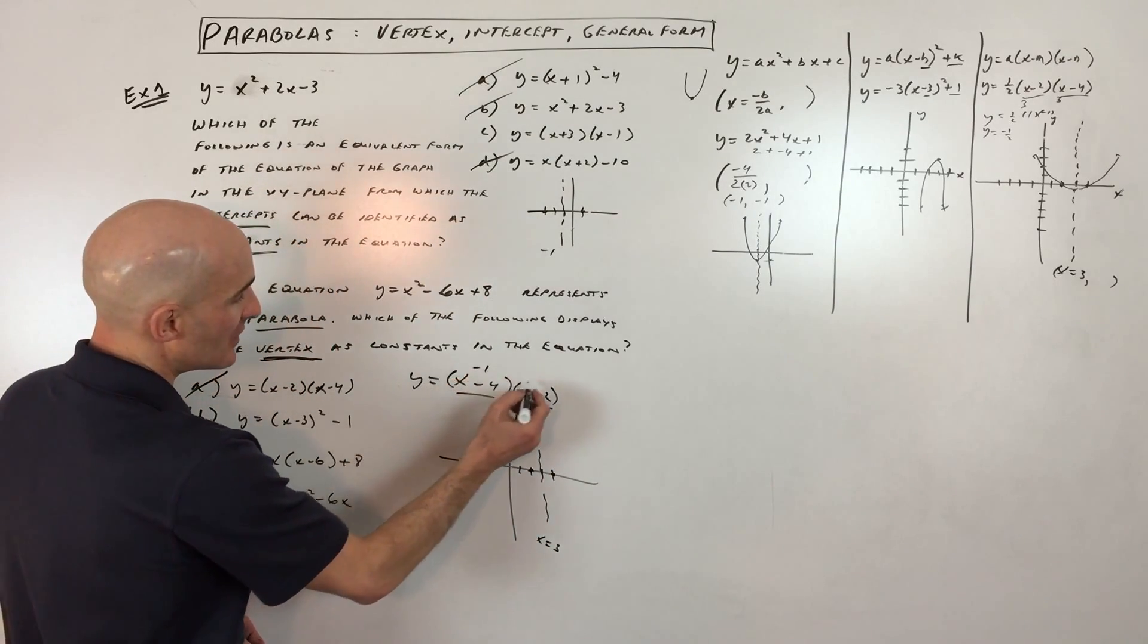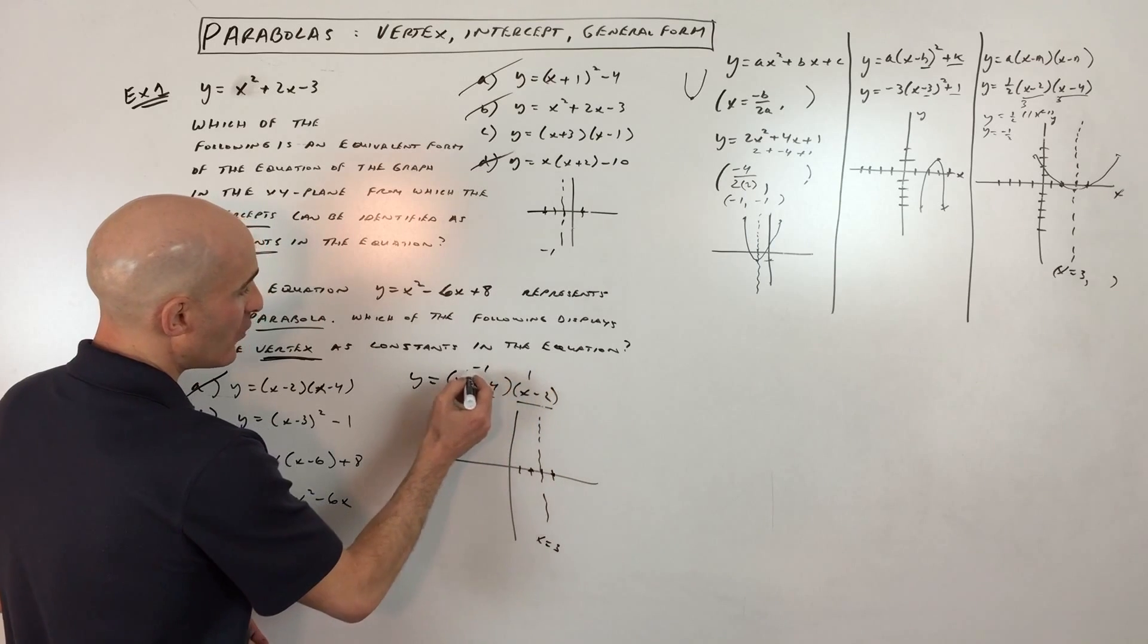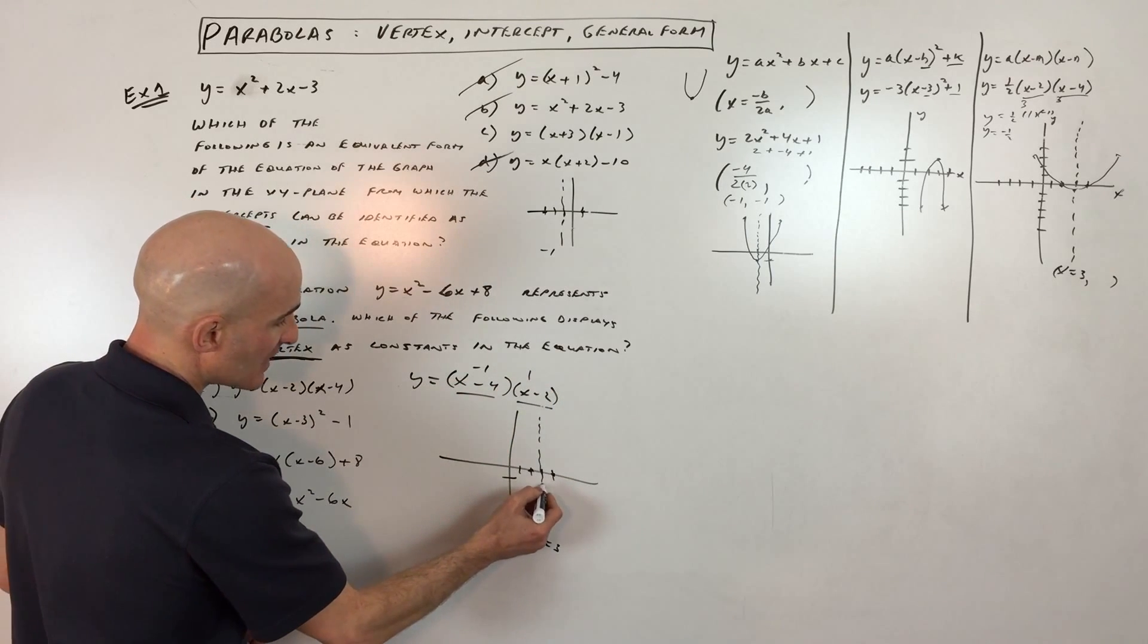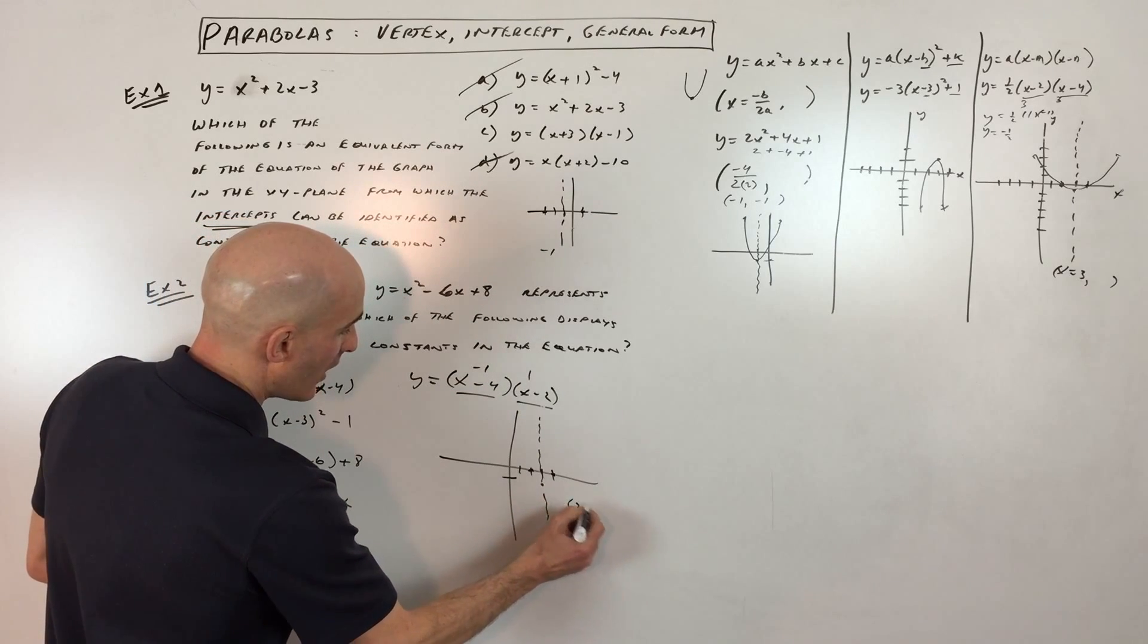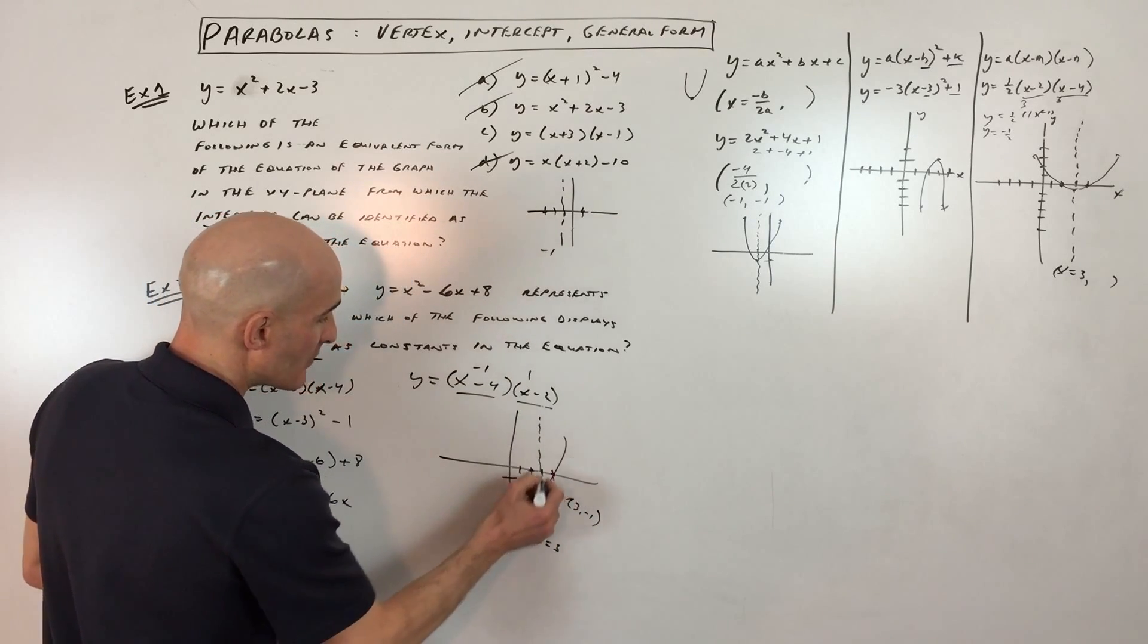And by putting it back in, you get negative 1 and positive 1. So if you multiply those together, you get negative 1. So you can see your vertex is going to be right here at 3 comma negative 1, like so. So your parabola is going to look like that.